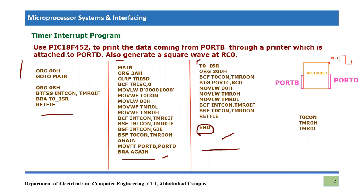The code starts with ORG 0x00, and the very first instruction is GOTO, which forces us to jump to the label 'main'. At main, we use CLRF TRISD to declare Port D as an output port where the printer is attached. Then BCF TRISC, 0 clears bit 0 of TRISC, declaring RC0 as an output pin since we will generate a square wave there.